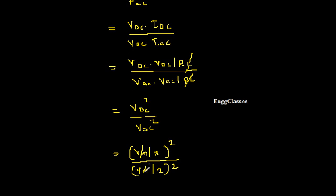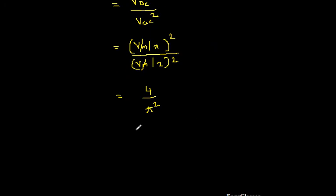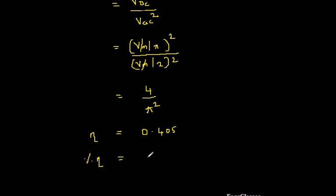Vm cancels, so we ultimately get (1/π) divided by (1/2), all squared. So 2 goes to the numerator — squaring gives 4 — divided by π squared. That gives us 4/π². Using the calculator, the value is 0.405, or in terms of percentage, the efficiency η equals 40.5%. So we get 40.5% efficiency in the case of a half-wave rectifier.